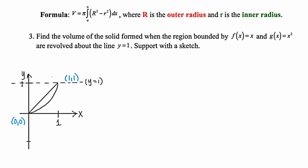In question number three, we're asked to find the volume of the solid formed when the region bounded by f(x) equals x and g(x) equals x squared are revolved about the line y equals 1. The axis of revolution is y equals 1, up here. I've already got the graph drawn, and I've included the axis of revolution. These two functions are the same functions used in sample questions 1 and 2.